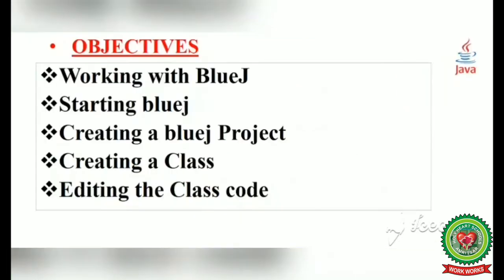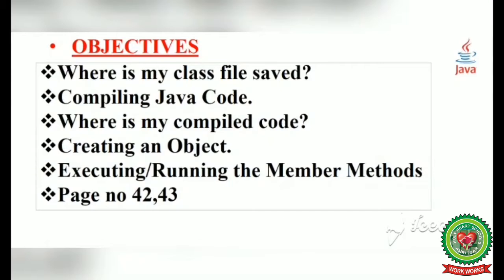In the last video we discussed working with BlueJ software: starting BlueJ, creating a BlueJ project, creating a class, and editing the class code. Today we will discuss where a class file is saved after creating a program, compiling the Java code, where the compiled code is saved, creating an object after creating a class, and executing or running the member methods.